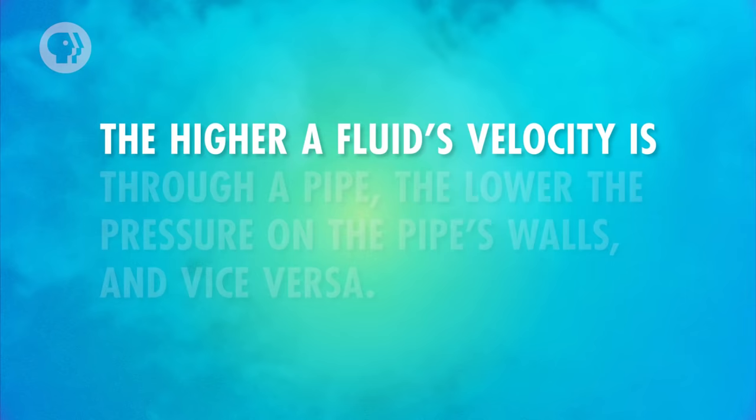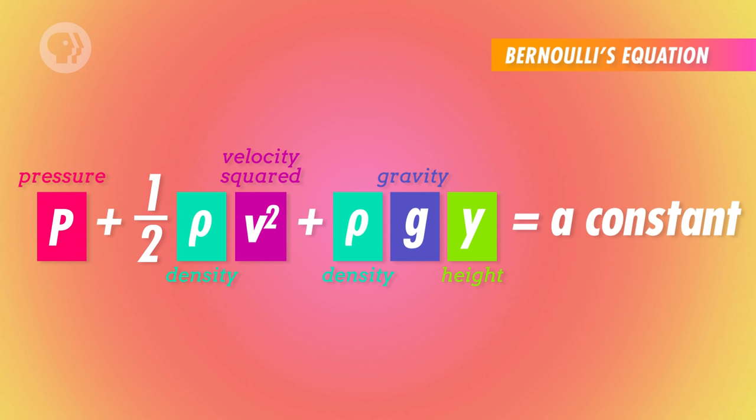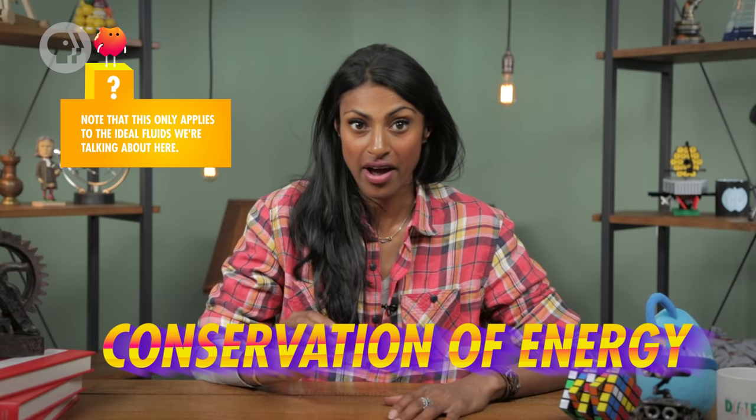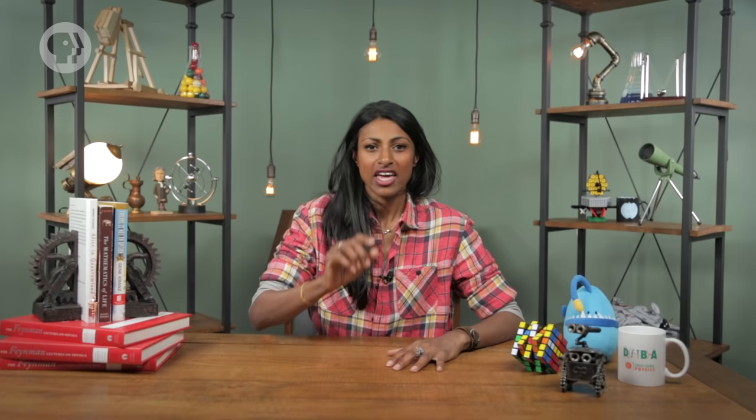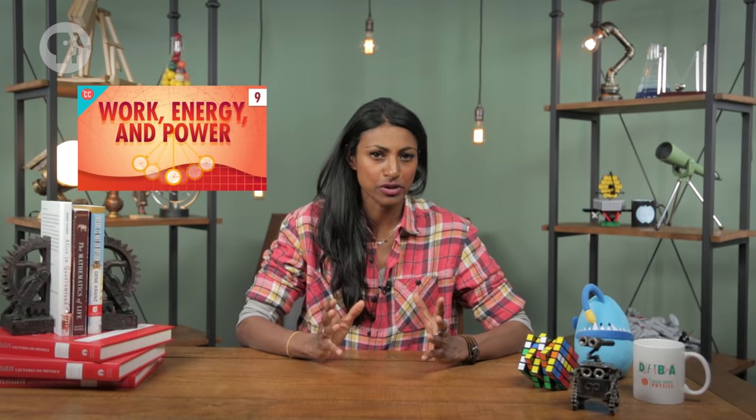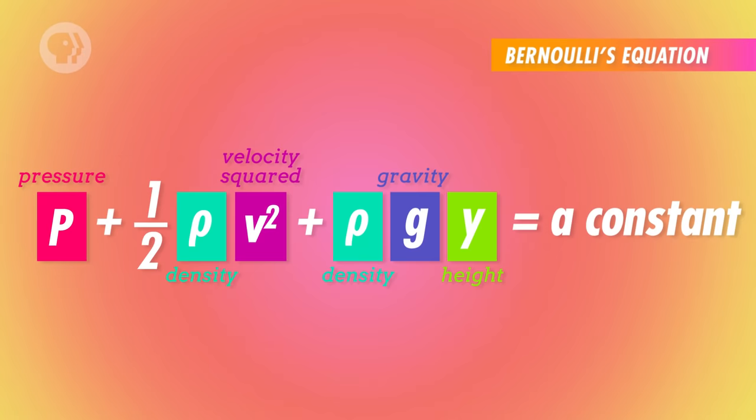This is known as Bernoulli's principle: the higher a fluid's velocity through a pipe, the lower the pressure on the pipe's walls, and vice versa. Bernoulli also came up with Bernoulli's equation. It might look intimidating at first, but it's really just a way of combining things you've already learned. Bernoulli based his equation on the conservation of energy. As a fluid flows through a pipe, it won't gain or lose energy — so no matter where the fluid is in the pipe, all its forms of energy added together equal the same number at any other point.